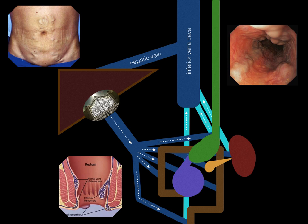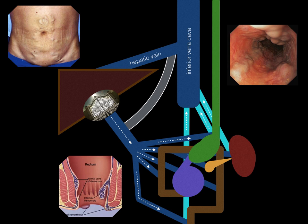The major risk with varices, especially esophageal varices, is their risk of rupture which can cause life-threatening bleeding. If initial measures such as endoscopic management and medications like non-selective beta blockers fail to prevent recurrent variceal bleeding, a procedure called a transjugular intrahepatic portosystemic shunt or TIPS may be utilized. A TIPS procedure connects the portal circulation directly with the systemic circulation, bypassing the liver.